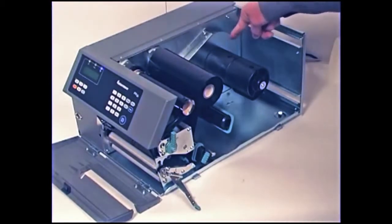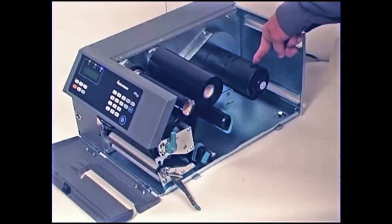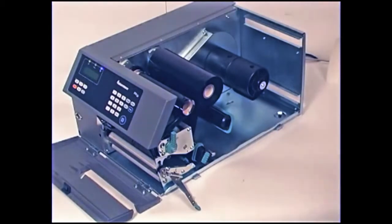If you are using a media roll with a 76mm 3-inch core, install a 3-inch adapter on the media supply hub before placing the media on the hub. Instructions for this procedure are in the printer's user guide, which can be downloaded from the Intermec website.